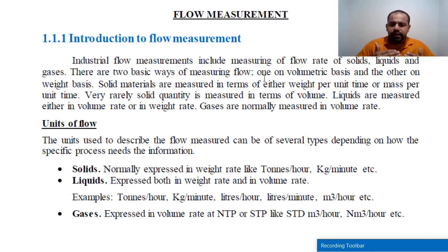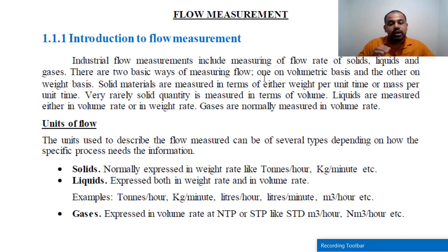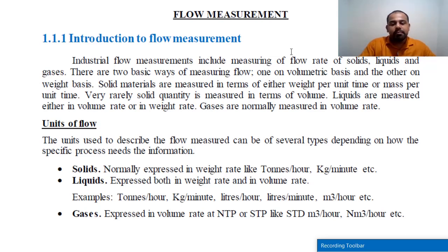This is liquid measurement. Liters per hour, liters per minute, and m³ per hour are the units used for liquid flow rate measurement. For gases and flow rate measurement, we use NTP and STP. NTP is Normal Temperature and Pressure. STP is Standard Temperature and Pressure.